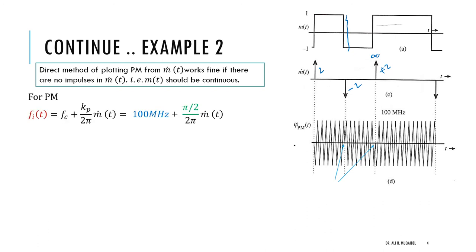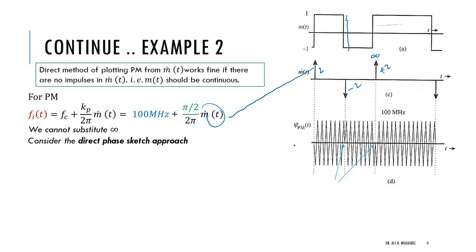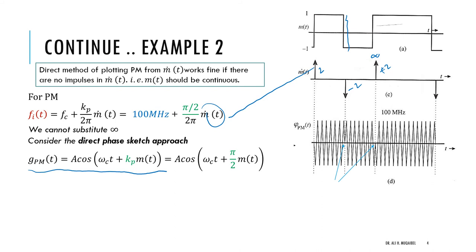Since for PM the instantaneous frequency is proportional to the derivative, substituting infinity gives no clear meaning. Instead of using the derivative method, we go back to the original phase definition to write the expression for the phase modulated signal directly. kp is given in the question, and now we substitute the message to avoid m-dot. The message is either +1 or −1, so we substitute those values directly.